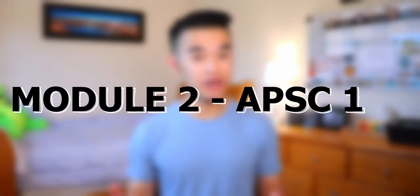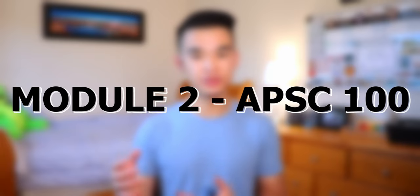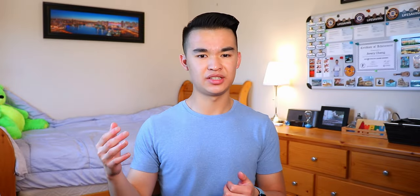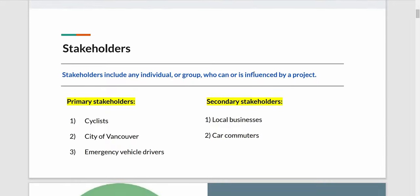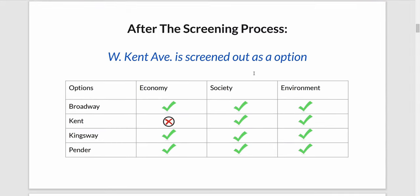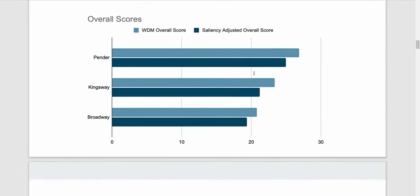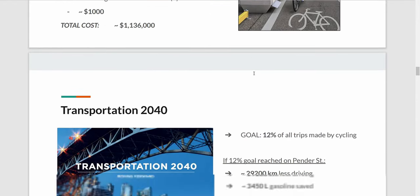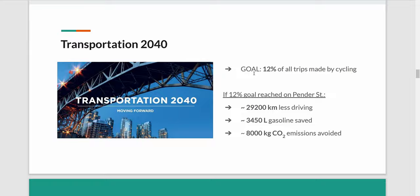In module two of AppSci 100, you'll focus on building decision-making skills by choosing where the next bike lane should be implemented in the city of Vancouver. Of the bike lane options you'll be given, you'll need to consider many aspects in your decision-making process, such as the stakeholders involved, the cost, and the sustainability. Once your group has decided on the best bike lane option, you'll be graded on a formal business presentation that outlines your recommendation.